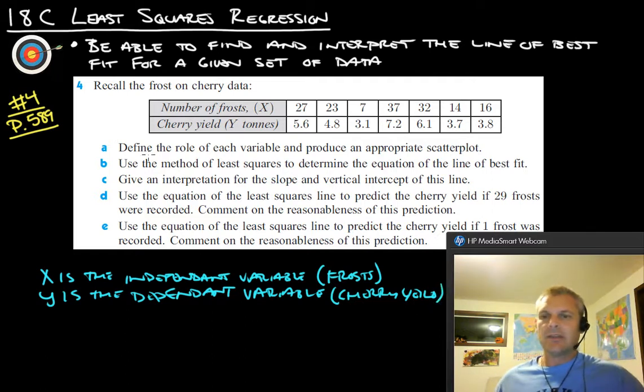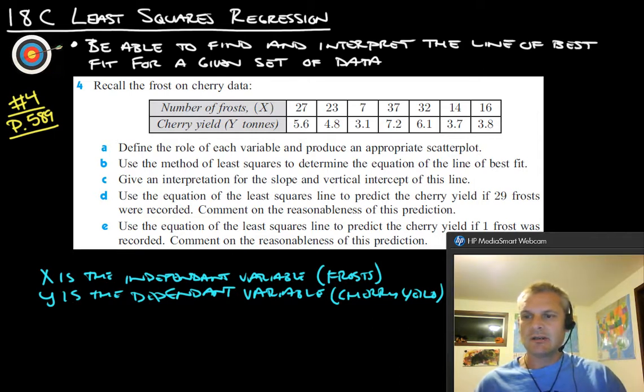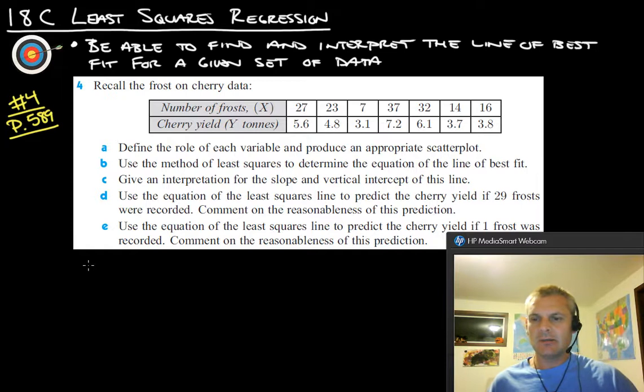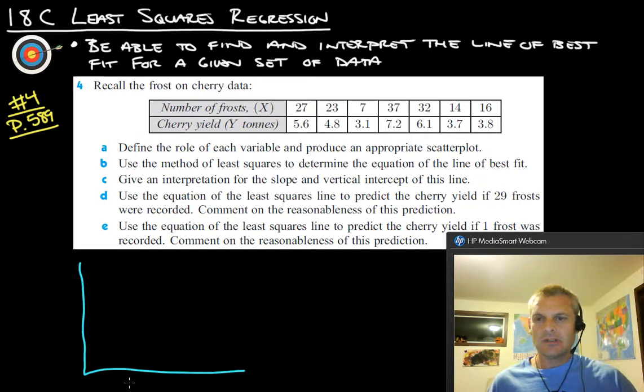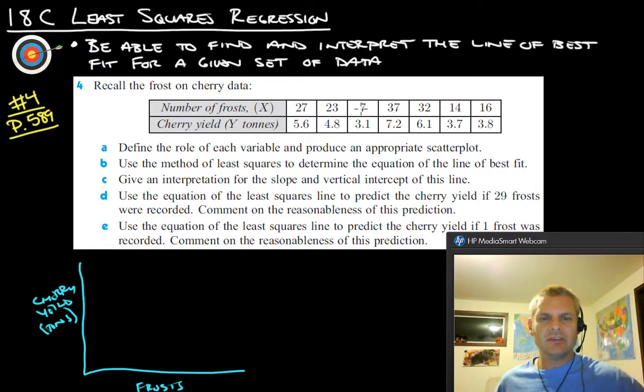So that's part A. We define the role of each variable and produce an appropriate scatter plot. So let's make a little scatter plot for this thing. I'm going to get rid of that so that we can make a nice little scatter plot with the space that we have here. So let's make the X here. On this one, this is the frosts.